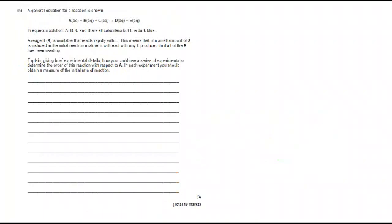Finally, looking at part H, a six marker. Following the general rules of six markers, there are three stages. They need to be virtually complete to get to level three and five or six marks. We've got A, B and C reacting to make D and E. In aqueous solution, A, B, C and D are all colorless, but E is dark blue. A reagent X is available that reacts rapidly with E. It means that if a small amount of X is included in the initial reaction mixture, it will react with any E produced until all of the X has been used up. Explain with brief experimental details how you could use a series of experiments to determine the order of this reaction with respect to A. In each experiment, you should obtain a measure of the initial rate of reaction. So there's a lot to think about here, a lot of steps to consider. Now, breaking it down into the three stages, which is what I would always recommend you try to do on these six markers. Stage one is going to be your preparatory work, your initial steps. And there's normally three to five steps within each one that you have to get most of.